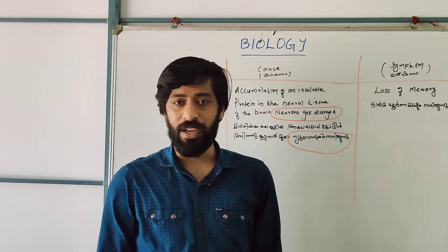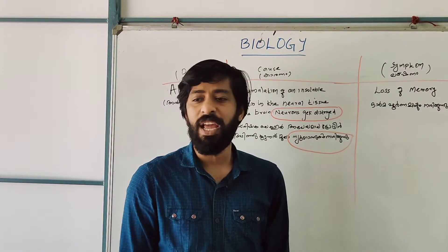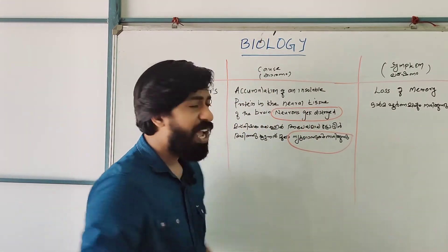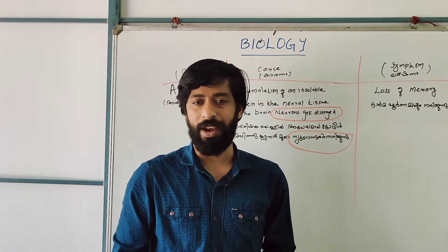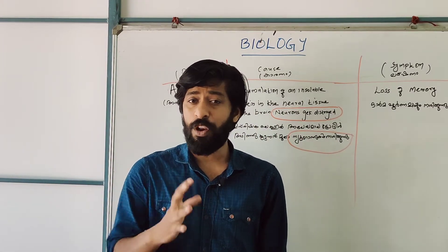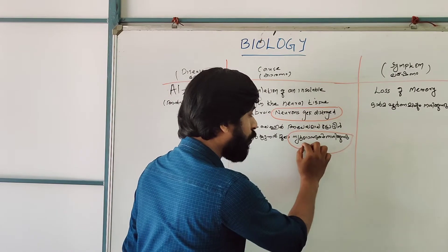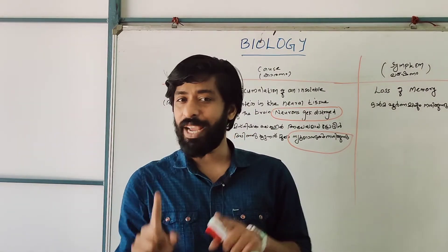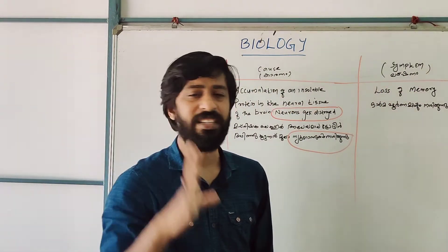The neurons get destroyed in the brain. As a result, the neurons get destroyed in the brain. This is the symptom of the brain — cause and symptom. A little bit of a sentence: loss of memory.